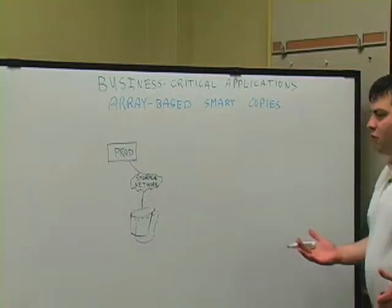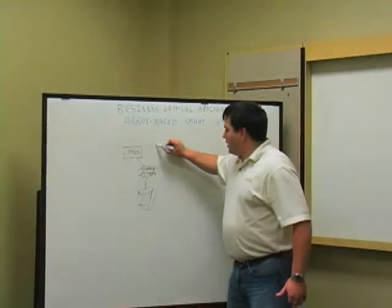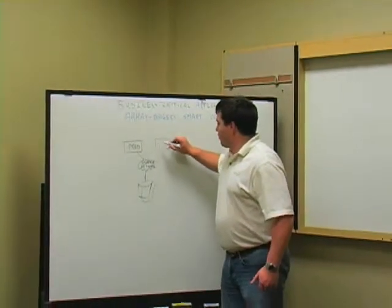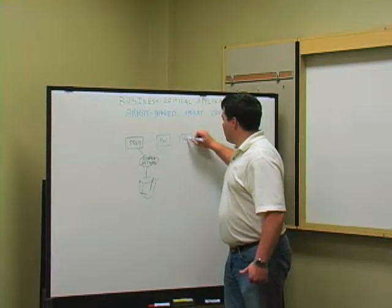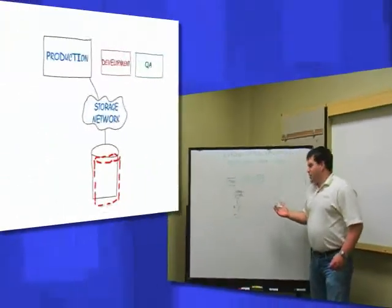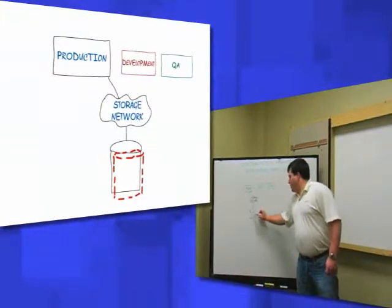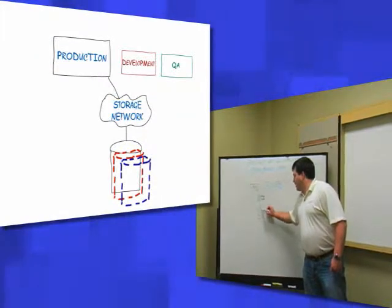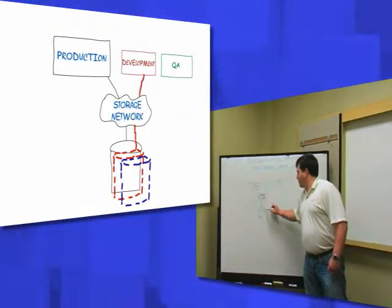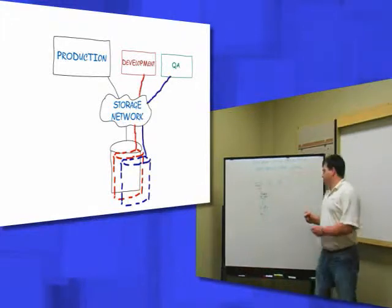One of the other uses for having smart copies on the array is to be able to do refreshes into development and into QA environments. We're able to take multiple copies of the data sets that we've created and present these up to other servers.